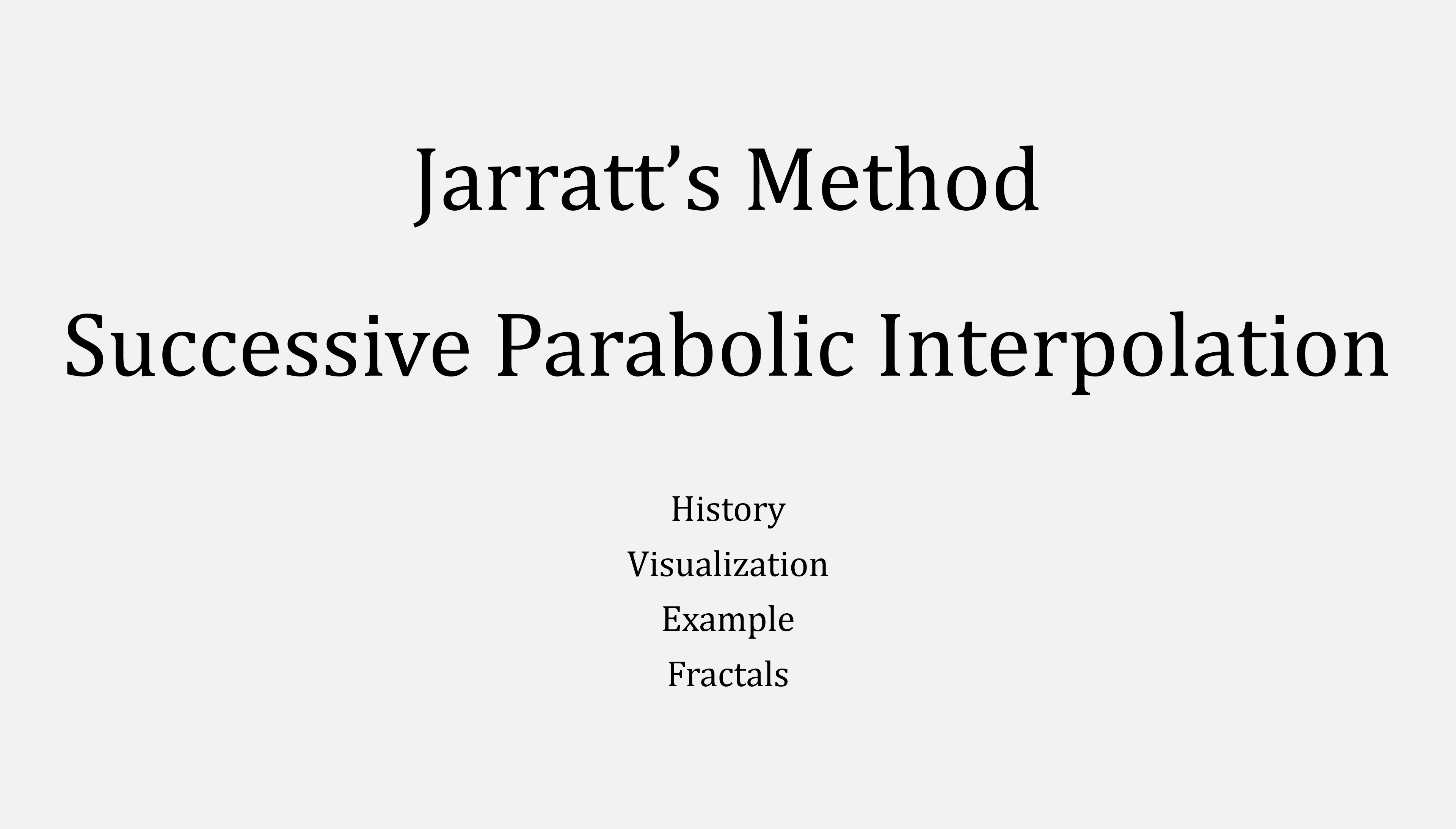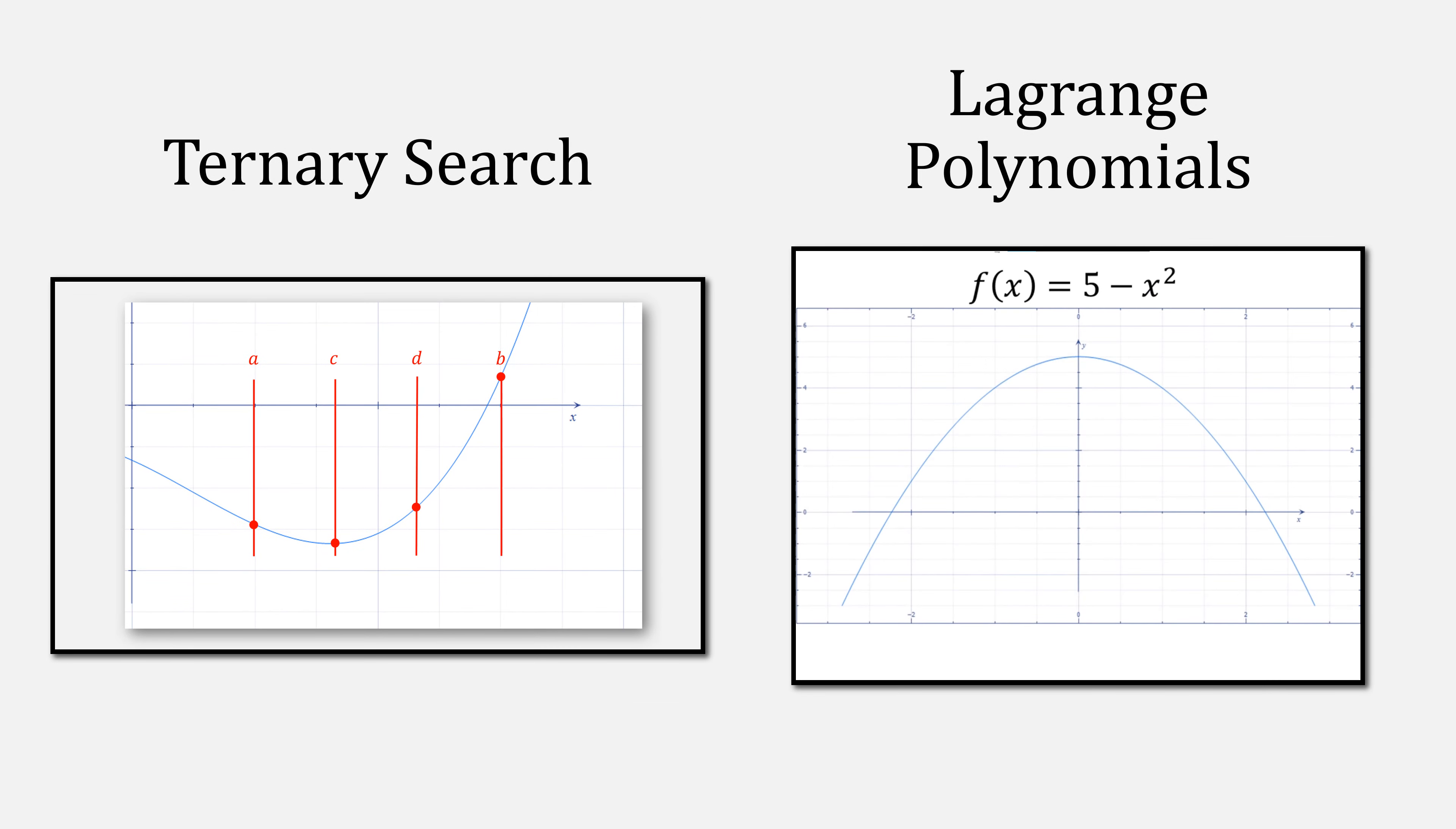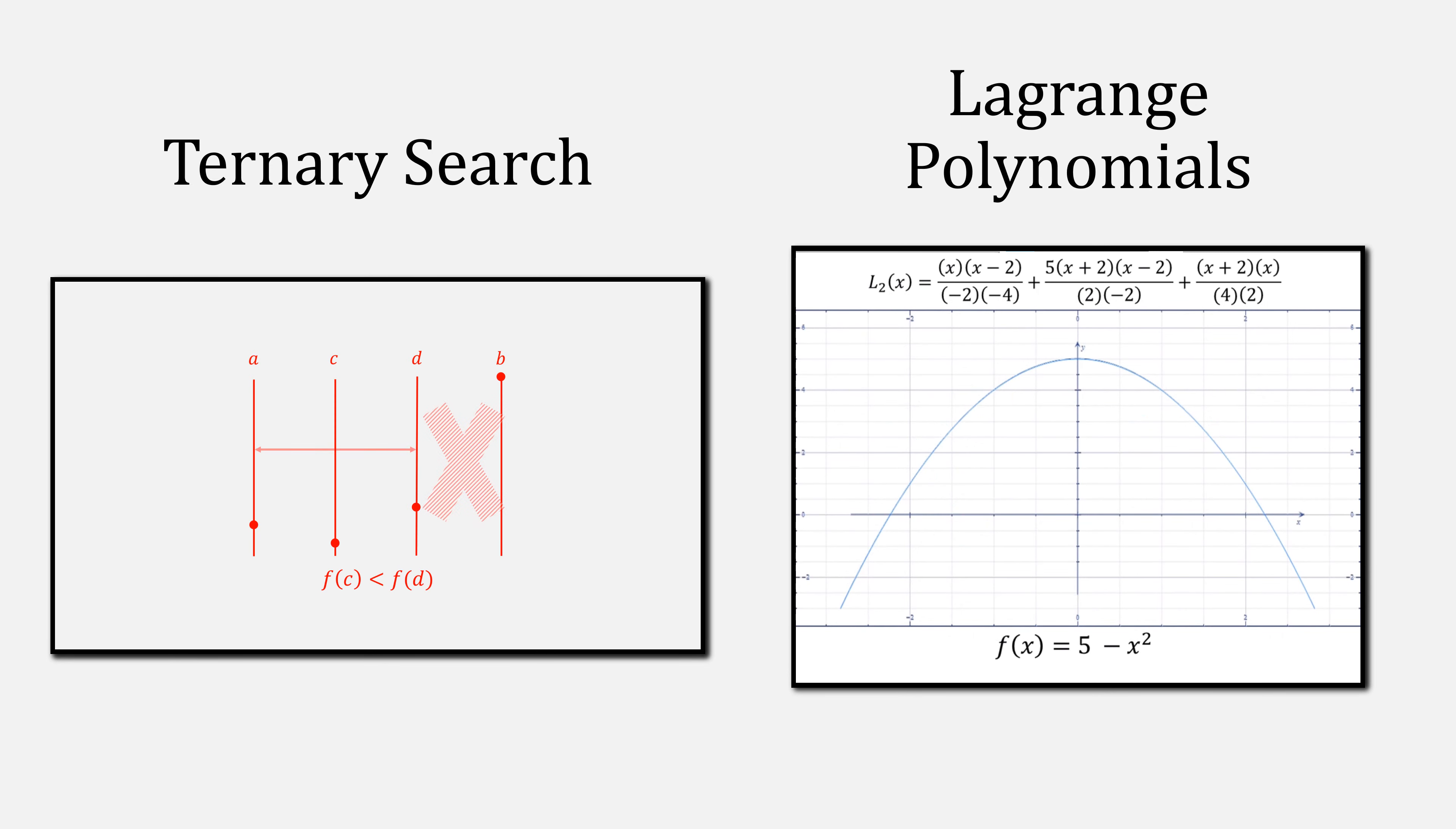We'll go over history, and then I'll try to visualize how this method works, as well as going over an example, and then cool fractals. For scaffolding, you should know something about minimization, such as ternary search, as well as interpolation using Lagrange polynomials. Check out my videos if you haven't already.